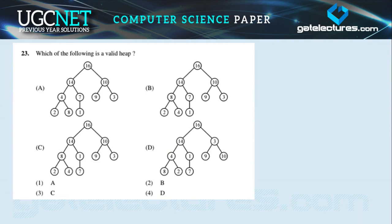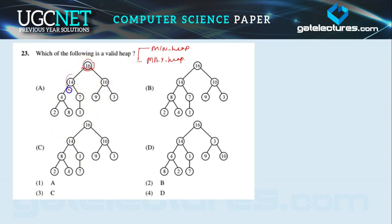Question 23: Which of the following is a valid heap? We are looking for a max-heap, where the root contains the maximum value compared to its children. Analyzing option one: 16, 14, 10 — 16 is greater than its children. Checking subtrees: 14 is greater than 4 and 7. But then: 8 is greater than 4, however a child has a higher value than its parent — so this violates the max-heap condition.